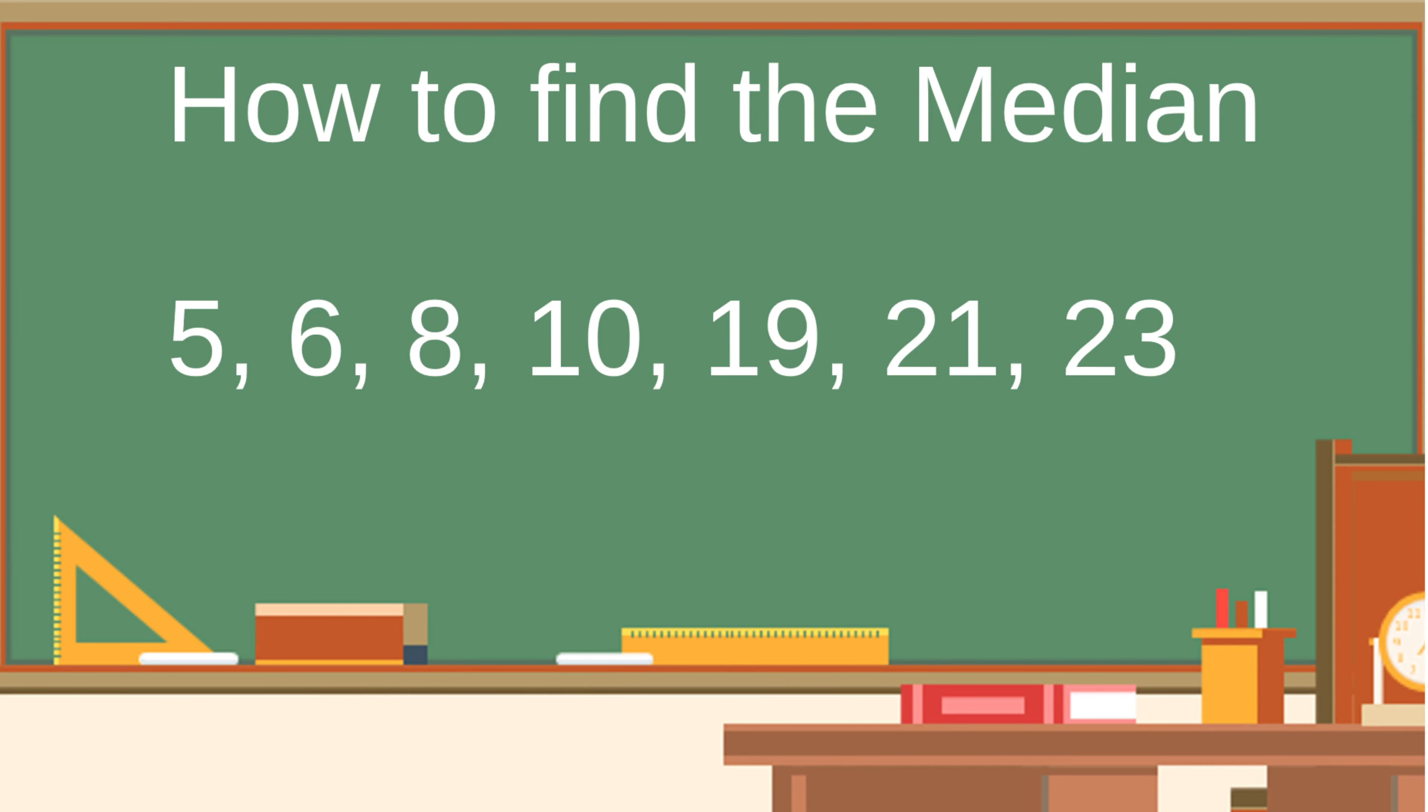A trick I like to use to find the number in the middle is to cross out one number on the left and one number on the right. We'll keep doing this, one number on the left and one number on the right, until we've reached the number in the middle. So, it looks like the median for this set of numbers is 10.